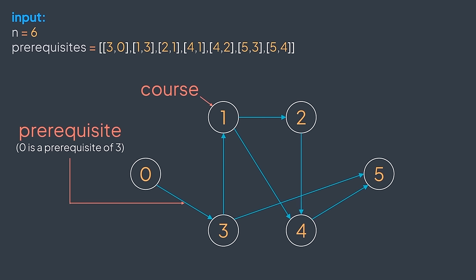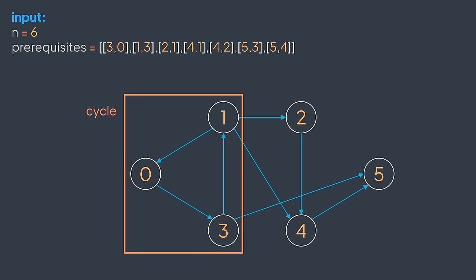Here we have elements (courses) and relationships between them (prerequisites). Whenever you face elements with relationships, you should think of using a graph. In our case, vertices represent courses and edges represent dependencies — an edge from u to v means we must take course u before course v. We build a directed graph and then search for a dependency cycle. If we find one, it's impossible to finish all courses — return false. If we find no cycle, return true.